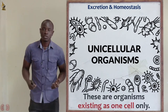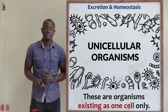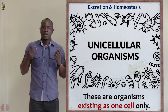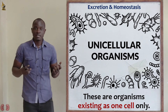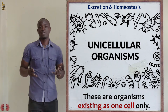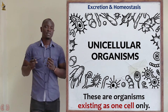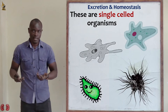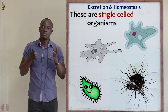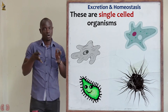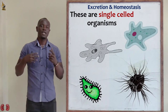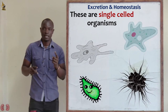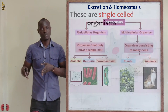Let's look at excretion and homeostasis in unicellular organisms. Unicellular organisms are organisms which exist as single-celled — just from the word 'unicellular': one cell, that is a unicellular organism.